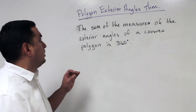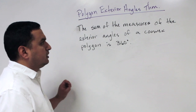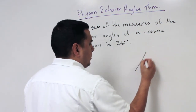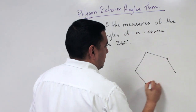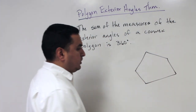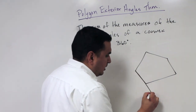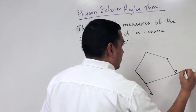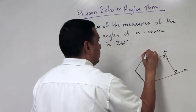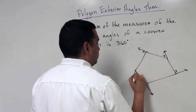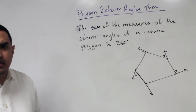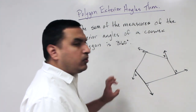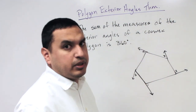The Polygon Exterior Angles Theorem states that the sum of the measures of the exterior angles of any convex polygon is always 360 degrees. To illustrate, draw a pentagon and extend each side outward — this creates five exterior angles. Regardless of whether the polygon is a pentagon, hexagon, or octagon, the sum of the exterior angles is always 360 degrees.